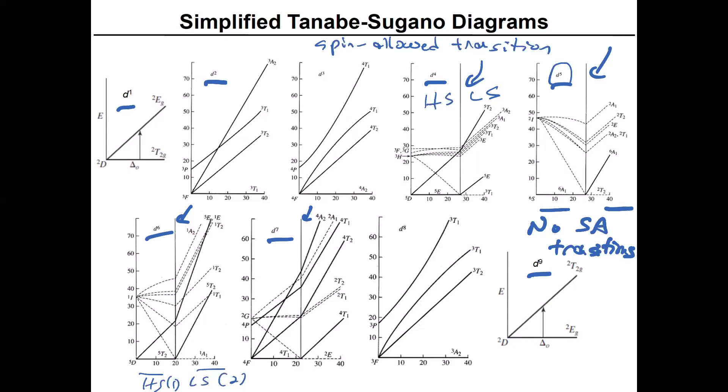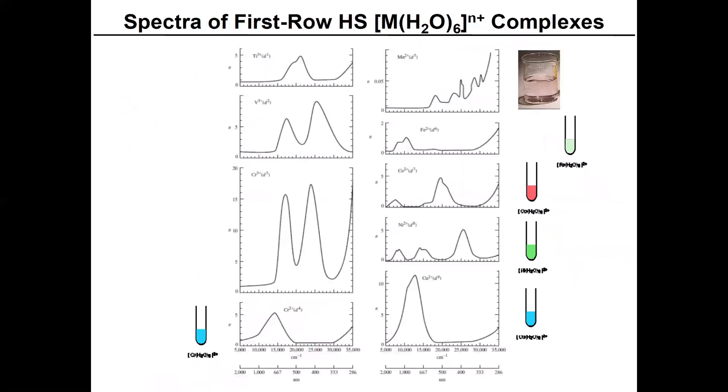So let's move on and take a look at the spectra of some typical compounds here. The ones that are immediately interesting is we said in D1 and D9, we should only have single transitions, but obviously you can see that there looks like there's shoulders on those two immediately.